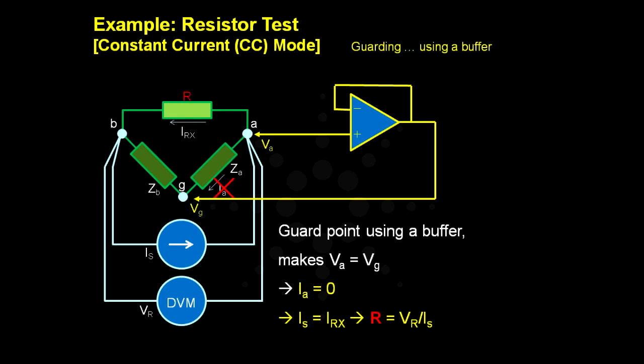Therefore, no current IA. And with IA equals zero, the correct resistance R can be measured with VR over IS.